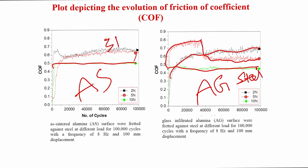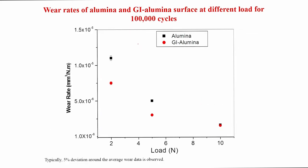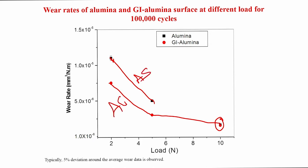This is for steel as the counter body material. At higher loads, the steady-state coefficient of friction is established relatively faster with less fluctuation. Fluctuation is observed at lower loads like 2 Newton and 5 Newton, but at 10 Newton load it is stabilized. The coefficient of friction for both sintered and glass infiltrated alumina is 0.5 or less. For glass infiltrated alumina, wear rate is lower at 2 Newton and 5 Newton load, but at 10 Newton load the two materials are more or less comparable.